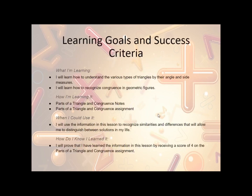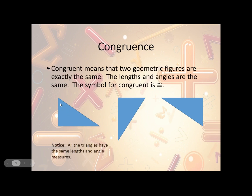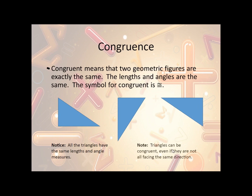Let's take a look at the parts of triangles and congruence notes. What is congruence? Congruent means that two geometric figures are exactly the same — the lengths and the angles are the same. The symbol for congruent is this equal sign with the squiggly on it. We can see three triangles here that are all exactly the same. They're rotated and flipped around, but the sizes are all the same. All the side lengths are the same and all the angle measures are the same.